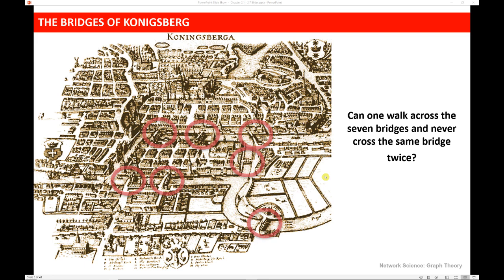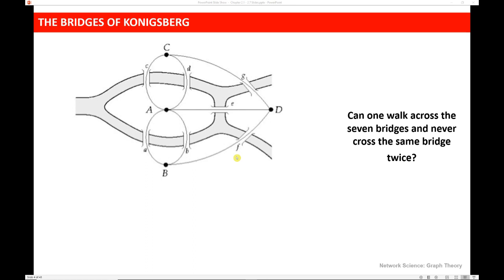Locals and tourists alike would attempt to solve this problem, seeing if they could find a proper path that would accomplish this, but nobody ever found one. Graph theory was born when the mathematician Euler came and looked for a way to prove that the problem either could or could not be solved.